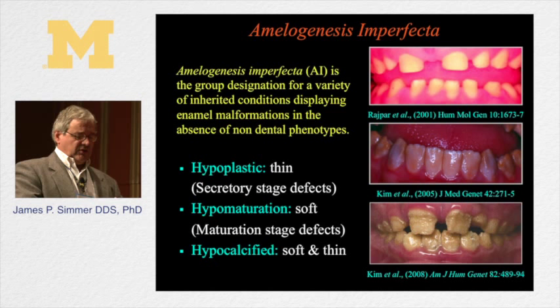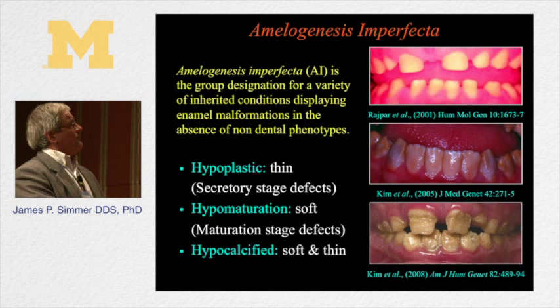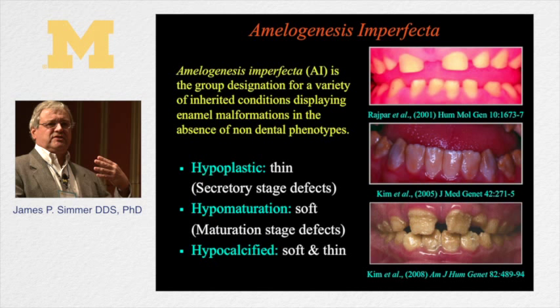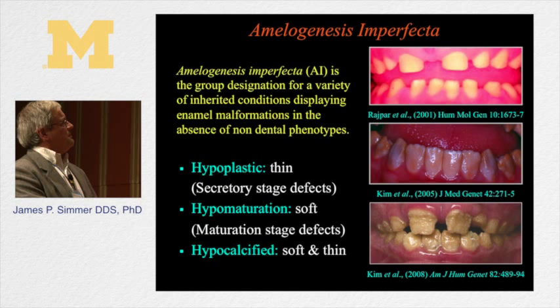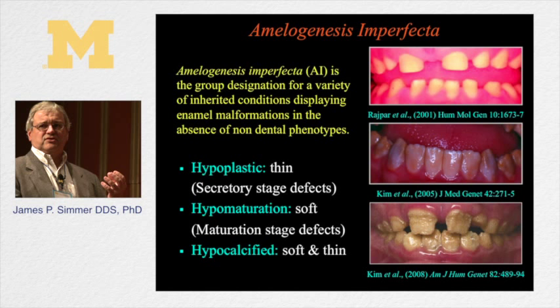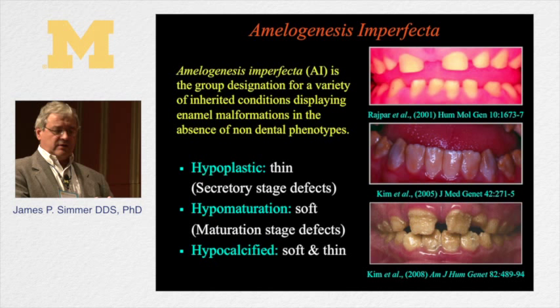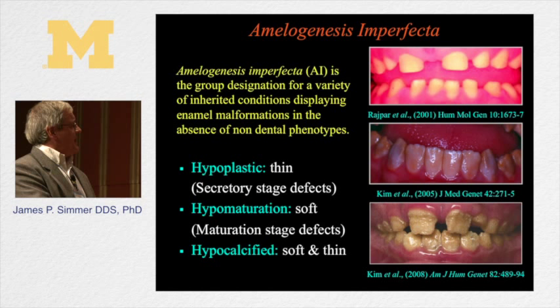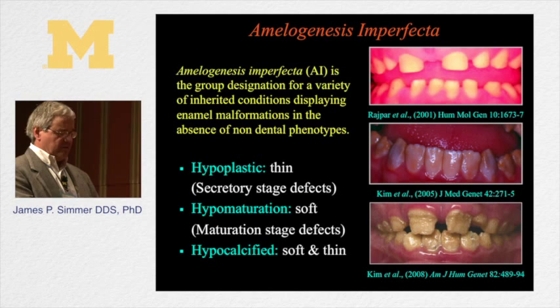When the process of forming enamel doesn't occur properly, you end up with defects that can look quite different in different patients. When the enamel is very thin or not even there, teeth often look small and have spaces between them — this is known as hypoplastic amelogenesis imperfecta. When you have hypomaturation amelogenesis imperfecta, the enamel is the proper thickness but enamel and dentin don't contrast well on radiographs, and the enamel is relatively soft. You can also get hypocalcified forms where the enamel is not only thinner but softer and tends to fracture off.